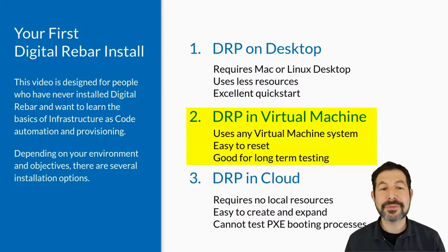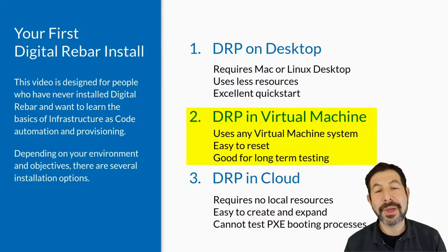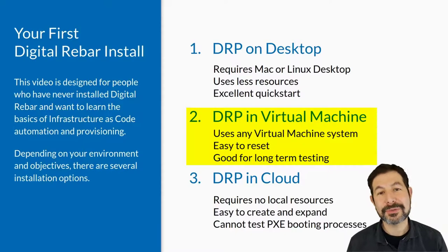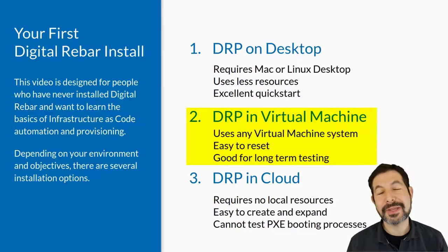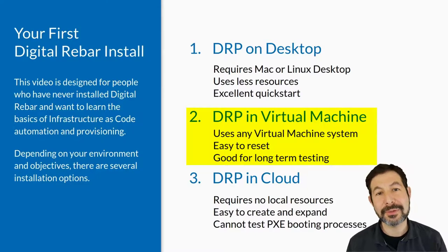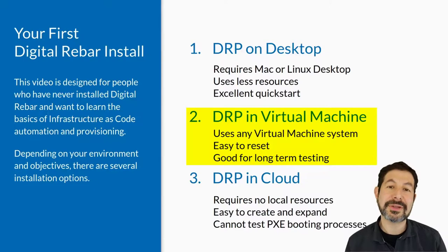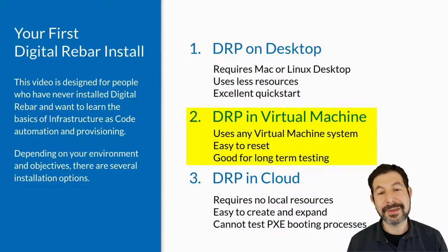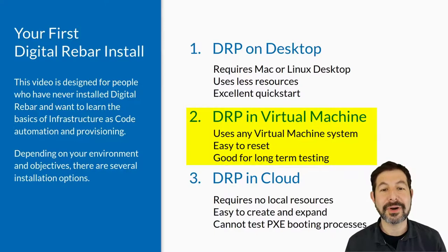For your first Digital Rebar install, you need to choose how you want to approach it. The simplest is to run Digital Rebar on your desktop — actually running the service on your desktop itself. We have a special mode for that that doesn't set it up as a permanent service. That's a really nice way to get started, but it requires a Linux or Mac desktop. It uses less resources and it's an excellent quick start.